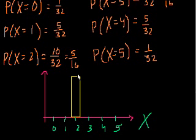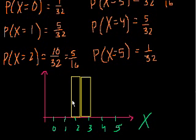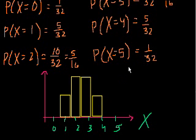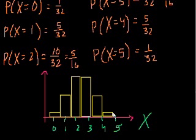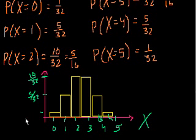The probability of getting 1 head is 5/32 — half the height of those bars. Getting 4 heads also has 5/32. The probability of getting either 0 or 5 is 1/32, about one-fifth of that height. So the heights are: 10/32 for 2 and 3, 5/32 for 1 and 4, and 1/32 for 0 and 5.